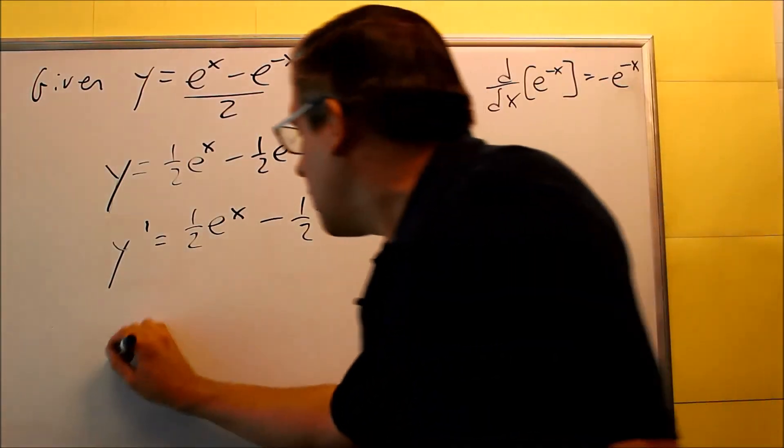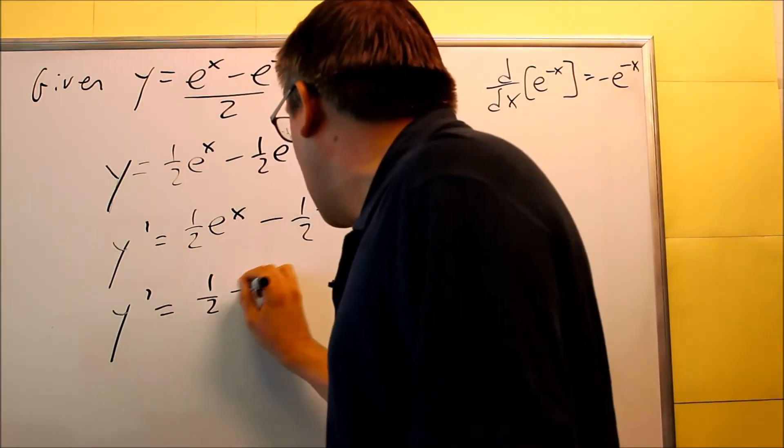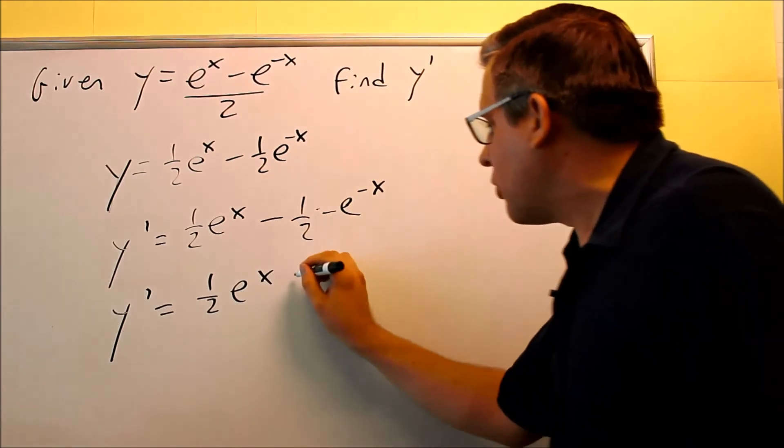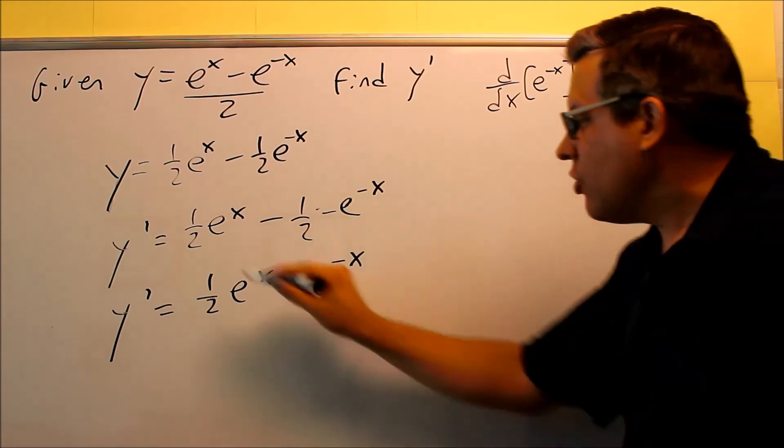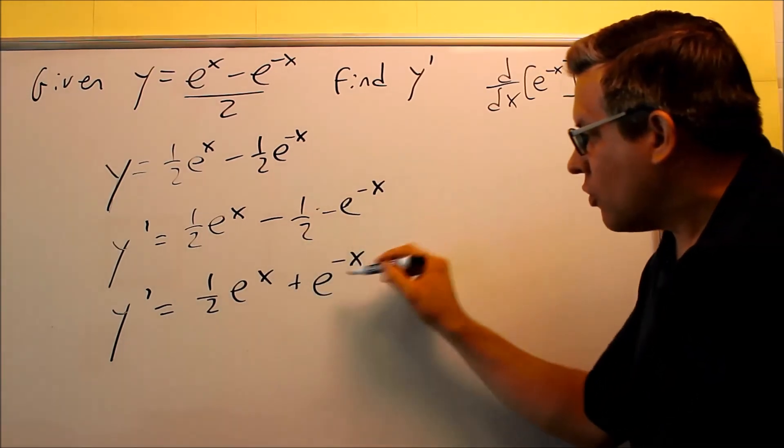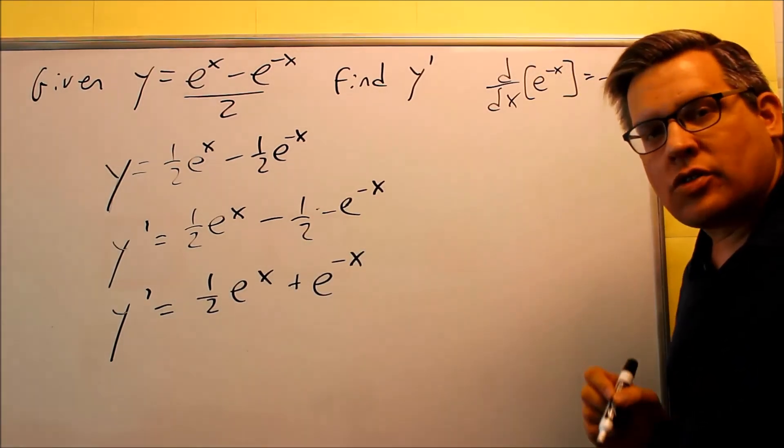And now we're just going to simplify it. Your derivative is going to be one-half e to the x minus minus is plus e to the negative x. And you can leave your answer like this, or again, this one you can write as one over e to the x if you want.